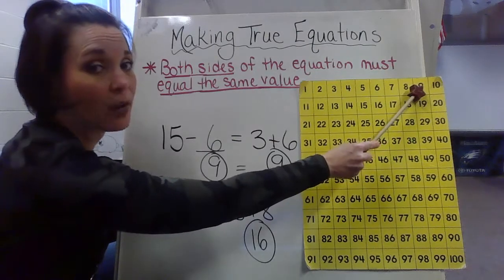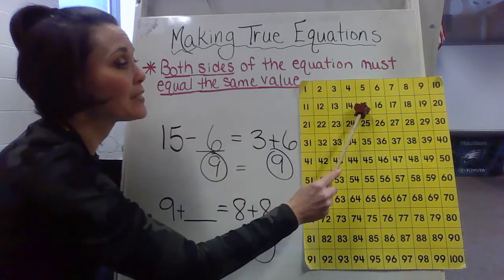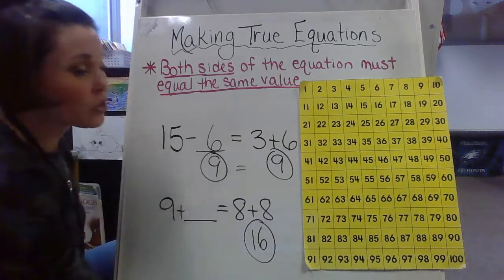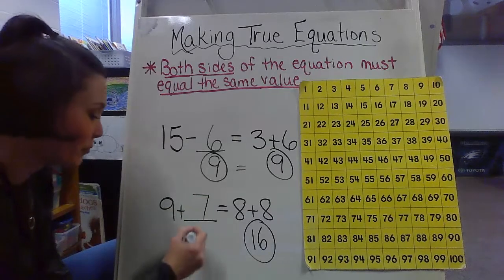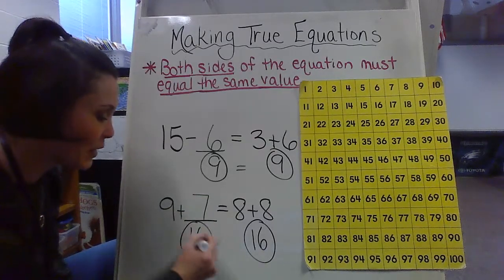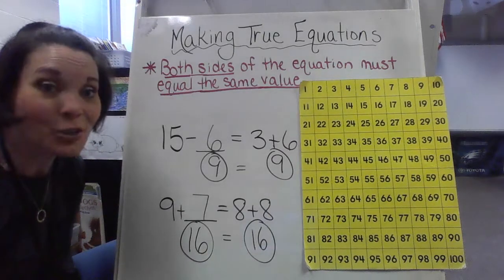9 and I want to count up to 16. 1, 2, 3, 4, 5, 6, 7. So therefore 9 plus 7 is going to give me 16. So therefore now those are true.